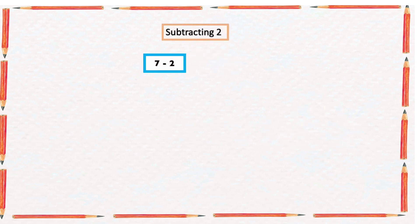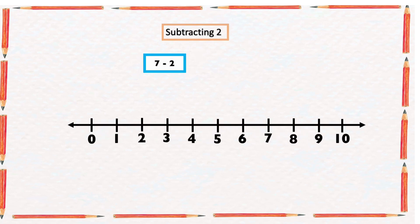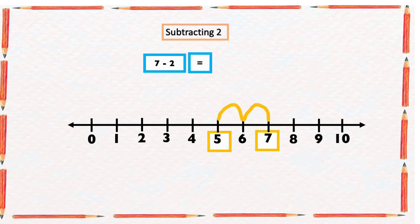7 minus 2 — on our number line, we're starting from number 7 and counting two numbers backward: one, two. The arrow ended at 5, so 7 minus 2 is equal to 5.